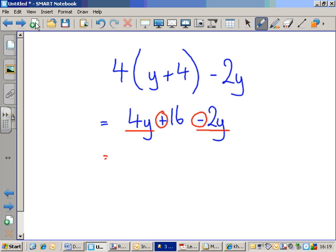So, four Y minus two Y. Four lots of Y take away two lots of Y is two Y plus sixteen. And there we go. Bob's your uncle.